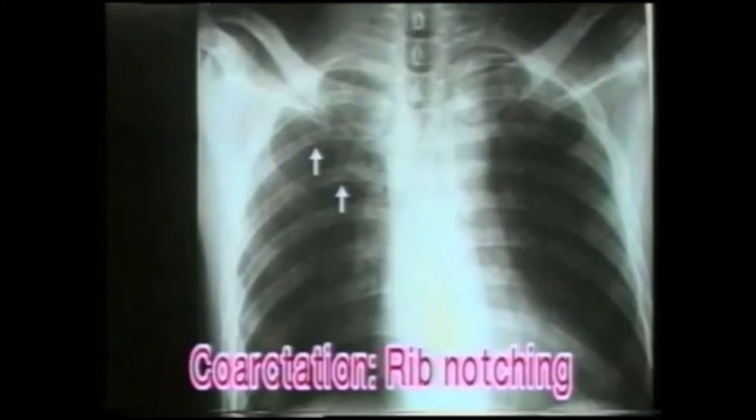In long-standing cases, the 3rd to 9th ribs show notching of the inferior border of the ribs in their posterolateral aspects. Note in close-up view the notching of the inferior border of the ribs in this case of coarctation of aorta. This notching is due to the dilated posterior intercostal arteries.